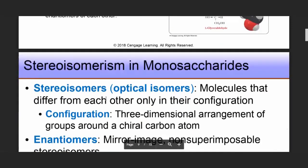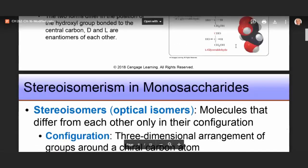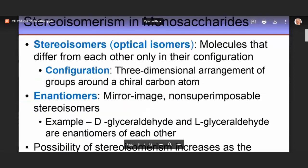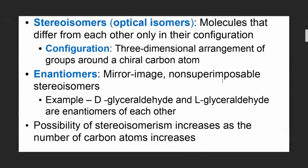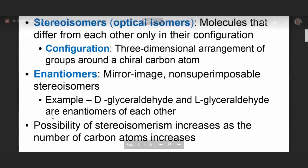Stereoisomerism in monosaccharides: stereoisomers are molecules that differ from each other only in their configuration. Configuration refers to the three-dimensional arrangement of groups around the chiral carbon — this is what the D and L designation describes. Enantiomers are mirror-image, non-superimposable stereoisomers. D-glyceraldehyde and L-glyceraldehyde are enantiomers of each other.